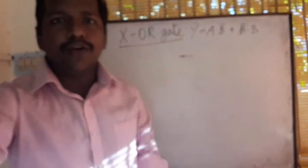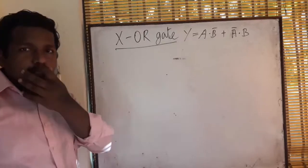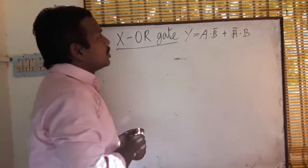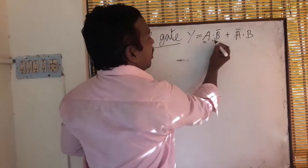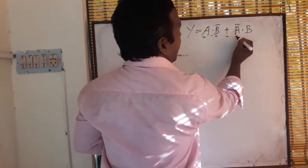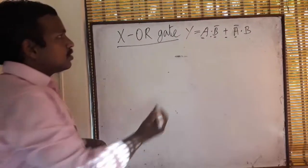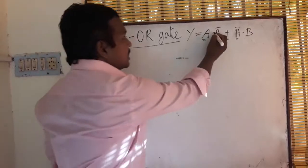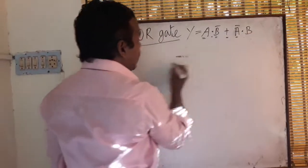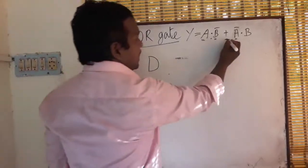Hello friends. In this video I am going to show you how to draw the XOR gate diagram and what is the truth table for XOR gate. The XOR gate output result will be A·B̄ + Ā·B. This is the XOR gate equation. Since B̄ and Ā are present, we have to use AND gates.